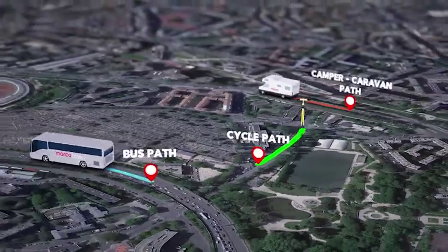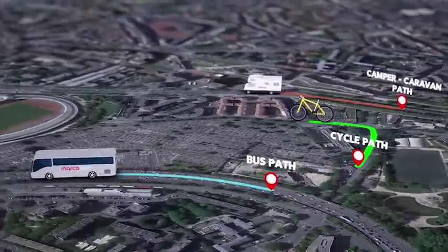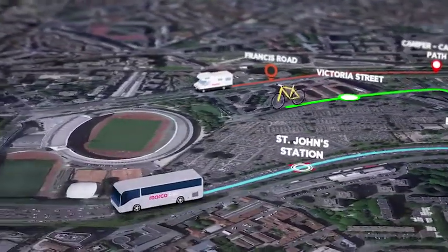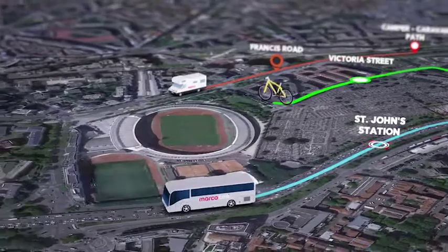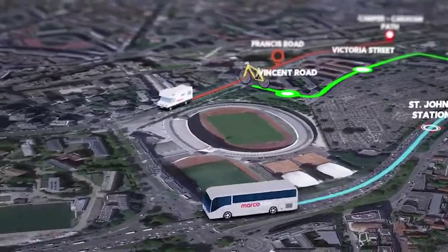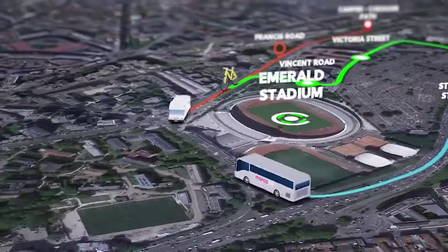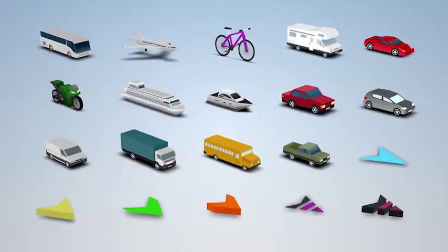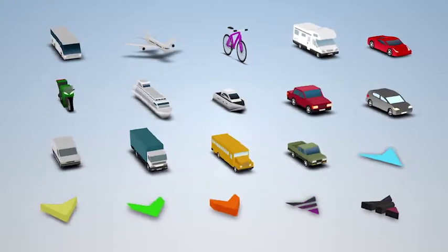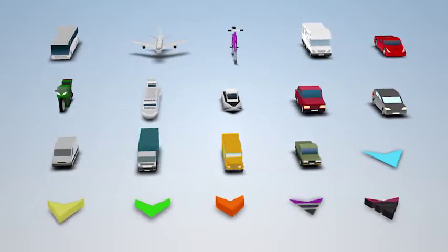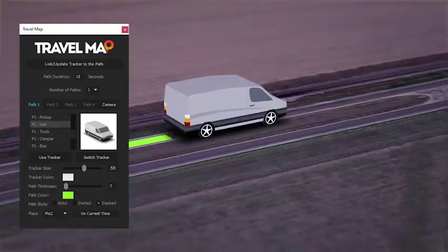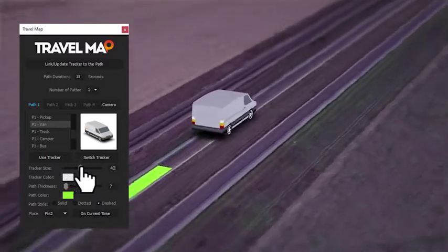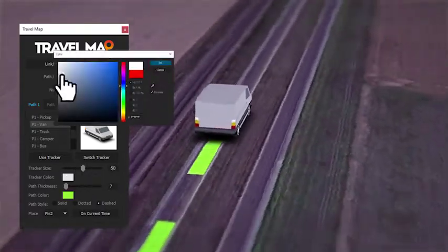That's Travel Map, a template and script for After Effects that allows you to easily create up to four different routes on your map using 3D vehicles. For each one of your paths, you can choose one of these included models. Of course, you can change their size and color, and you can insert your text or logo.